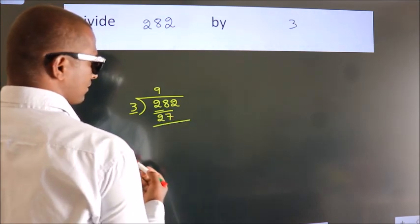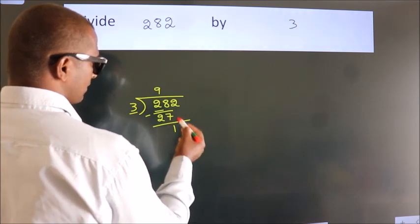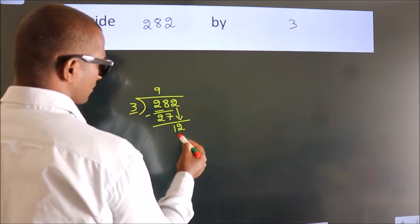Now we should subtract. We get 1. After this, bring down the beside number. So 2 down. So 12.